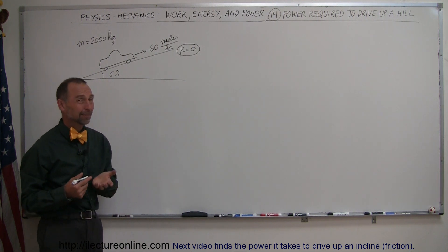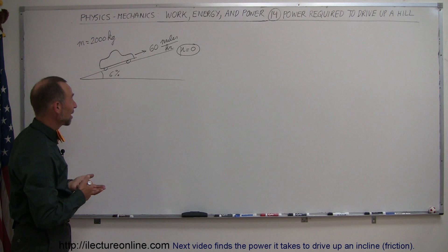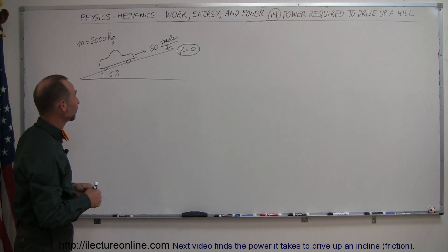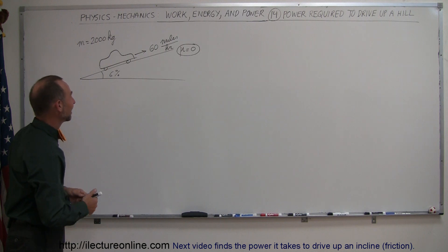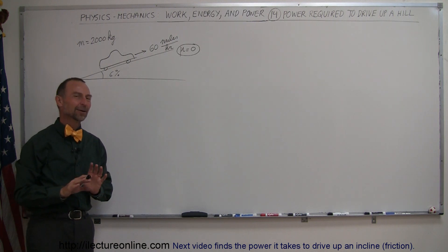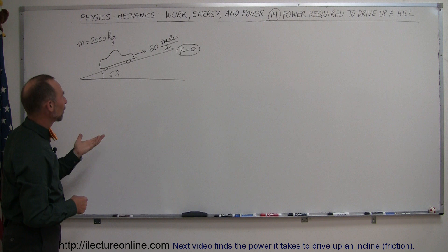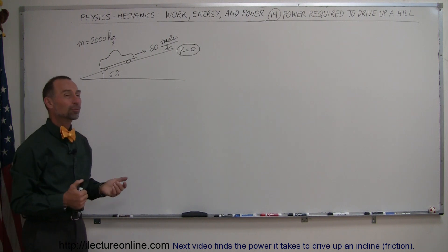Now of course in the real world that's impossible because you can't drive up a hill if there's no friction - the car will not go anywhere, the tires will simply spin out and the car will just slide down the hill. So just assume that we ignore that little fact and let's say the hill has a steepness of 6%, the Mazda car is 2,000 kilograms, wants to drive 60 miles per hour - how much horsepower does it take?